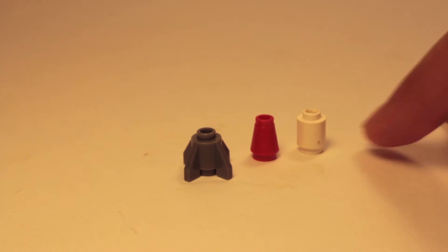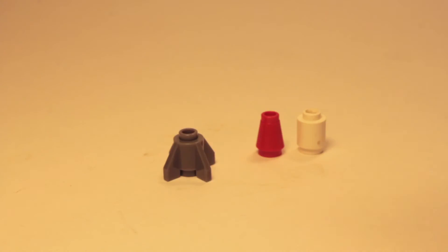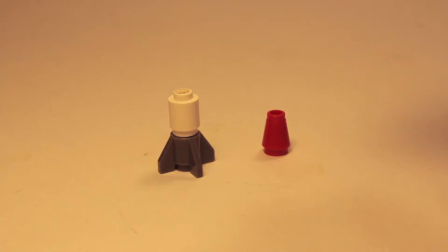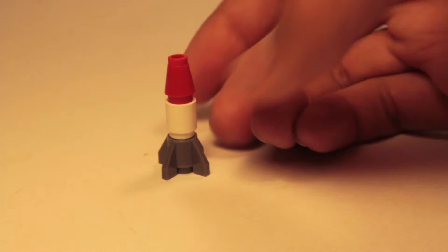As you can see here, I have a circular brick, a comb brick, and one of these little missile rocket-type parts. So, I'm going to get my circular brick, place it on top of this part here, and finally, on top, I'm going to place my comb brick.